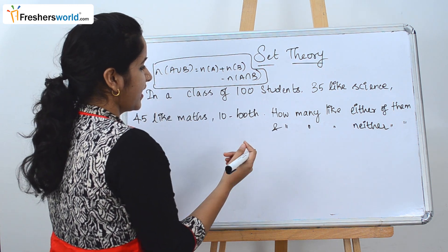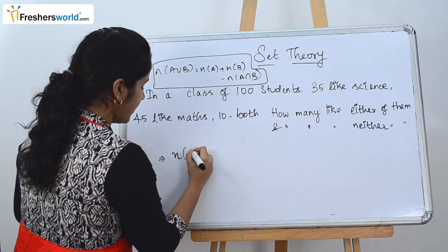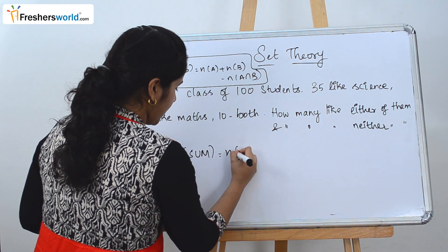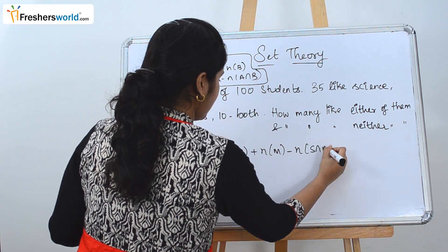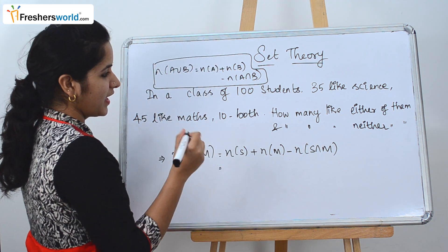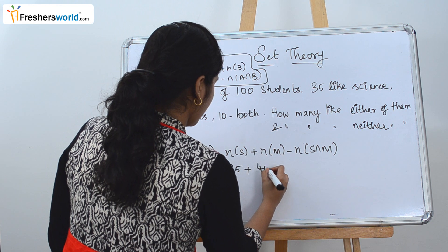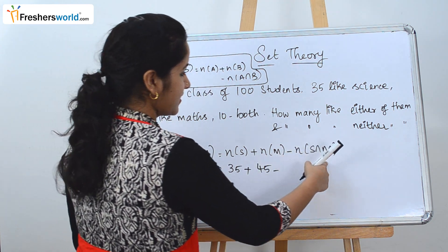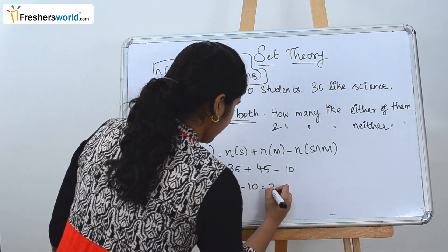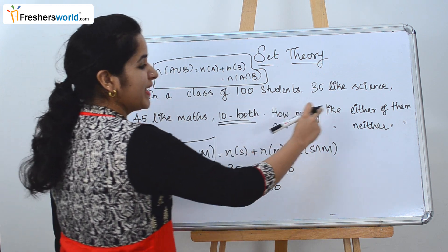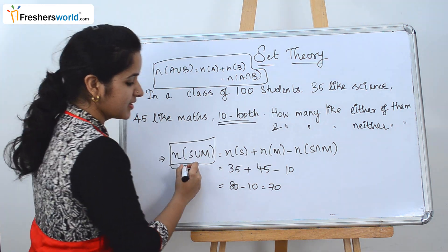There are 100 students; 35 like science and 45 like maths. So N(S ∪ M) = N(S) + N(M) − N(S ∩ M). Substituting the values: 35 + 45 − 10 = 80 − 10 = 70. So the number of students who like either science or maths is 70.